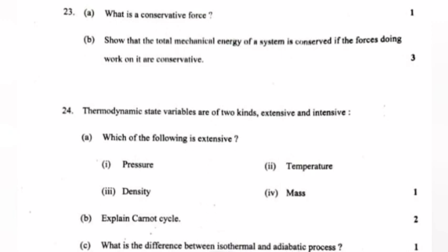Thermodynamic state variables are of two kinds: extensive and intensive. (a) Which of the following is extensive? (1) pressure, (2) temperature, (3) density, (4) mass. (b) Explain Carnot cycle.